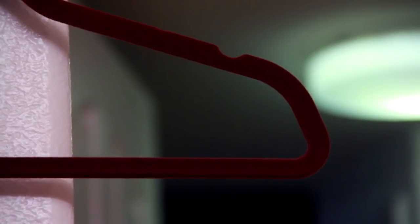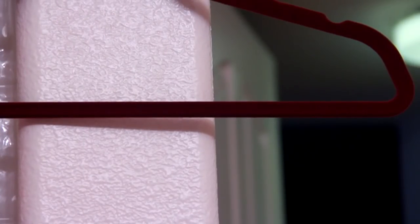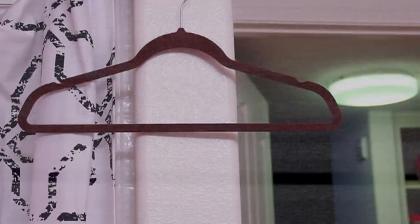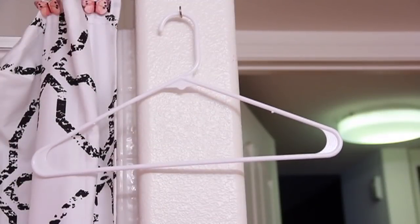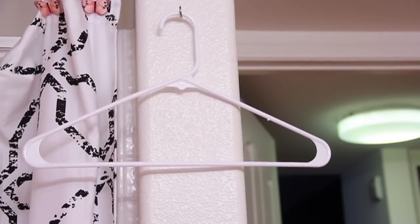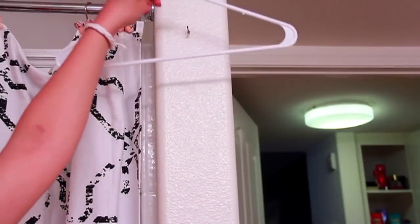They usually come like this with velvet wrapped around, and they're awesome—I mean, they're great. Your clothes don't slip off of them, but they're so expensive. When you have your regular hangers, you try to put maybe something with a spaghetti strap on it and it just slips right off, and it's so annoying.